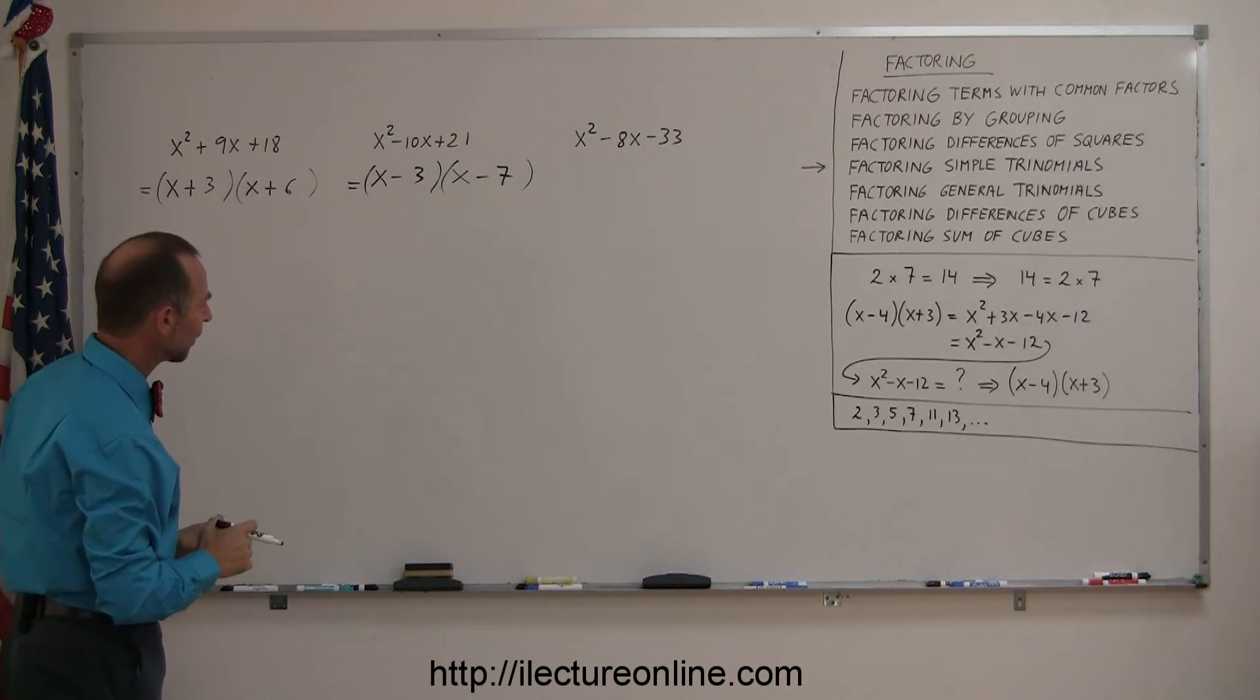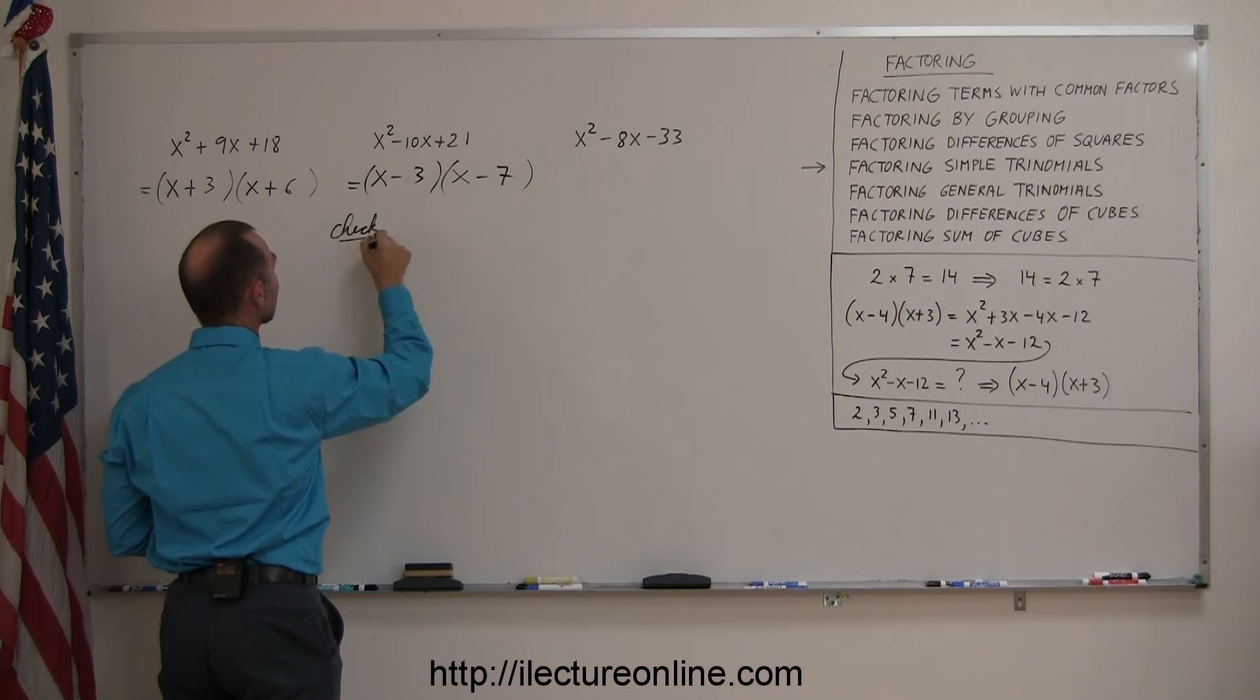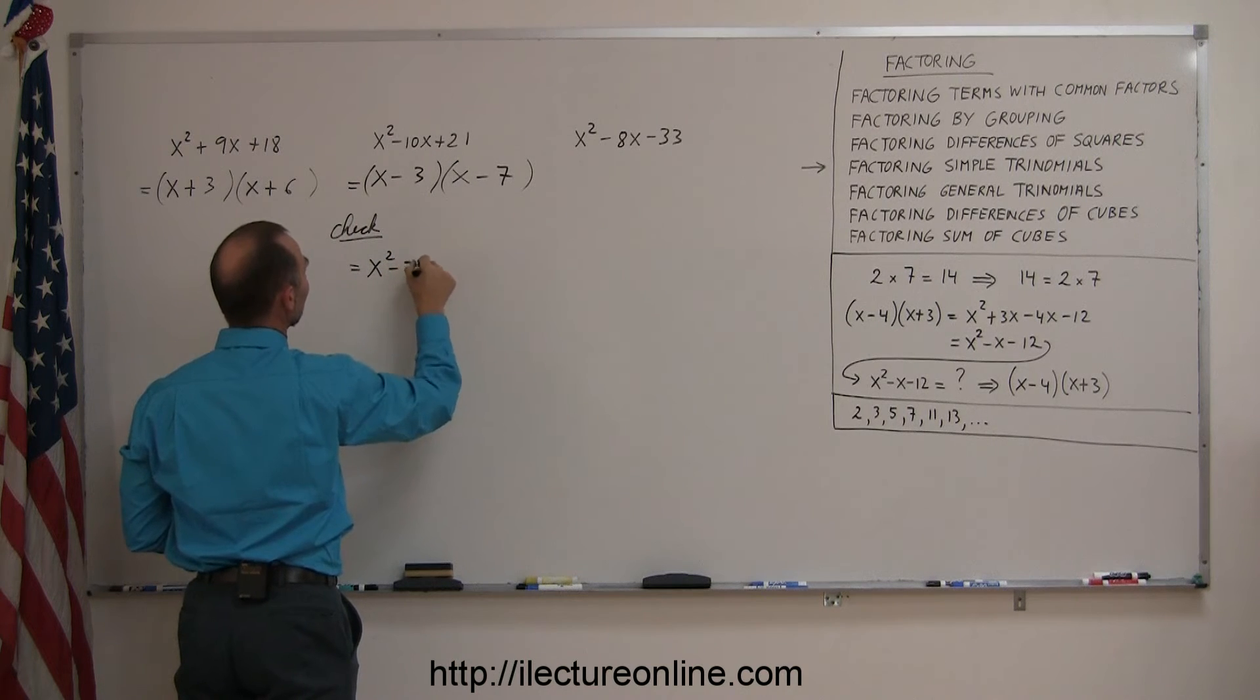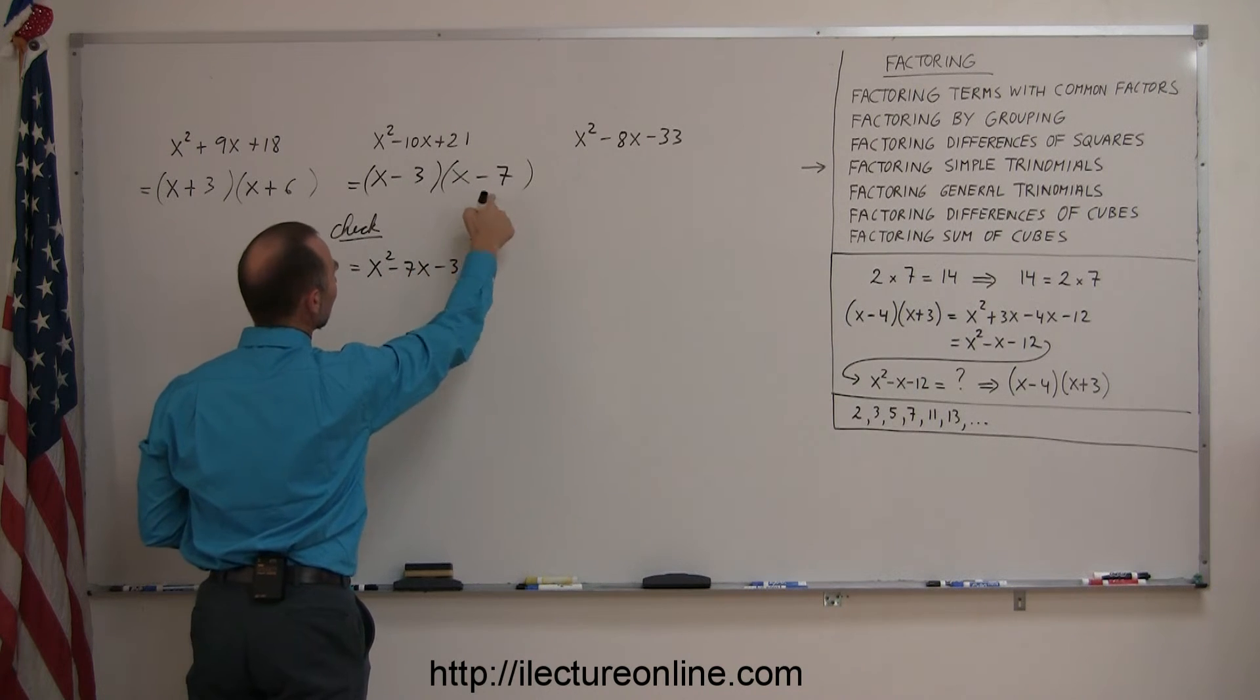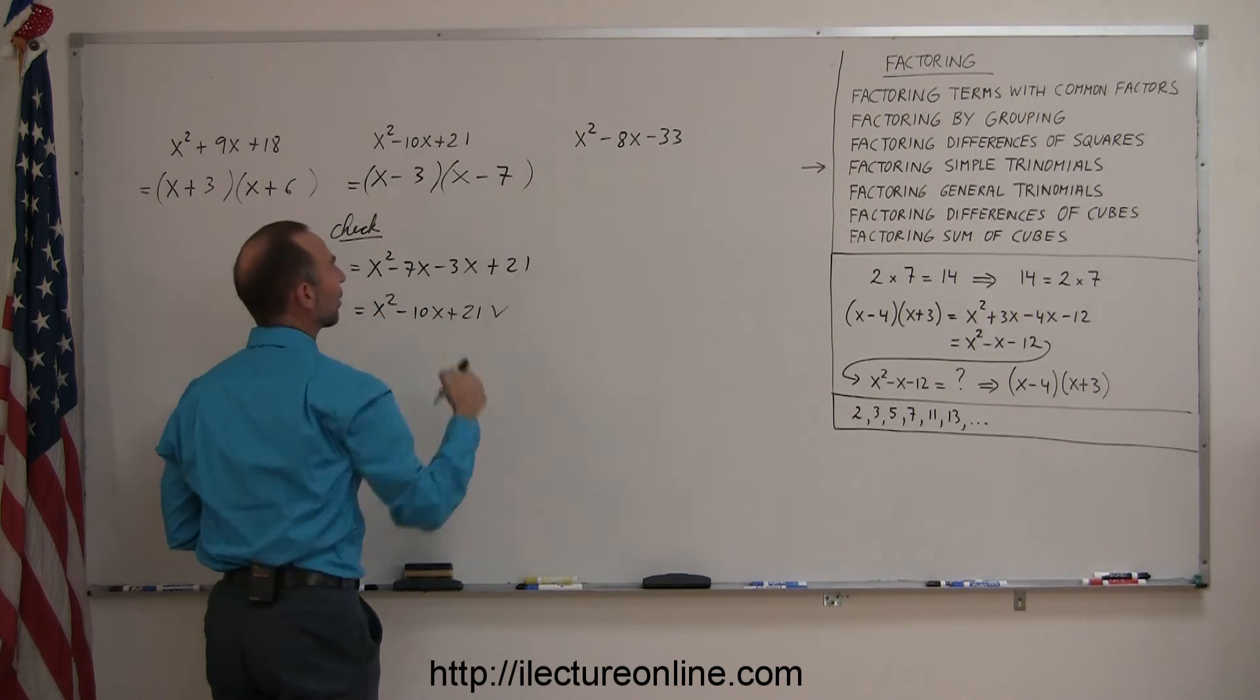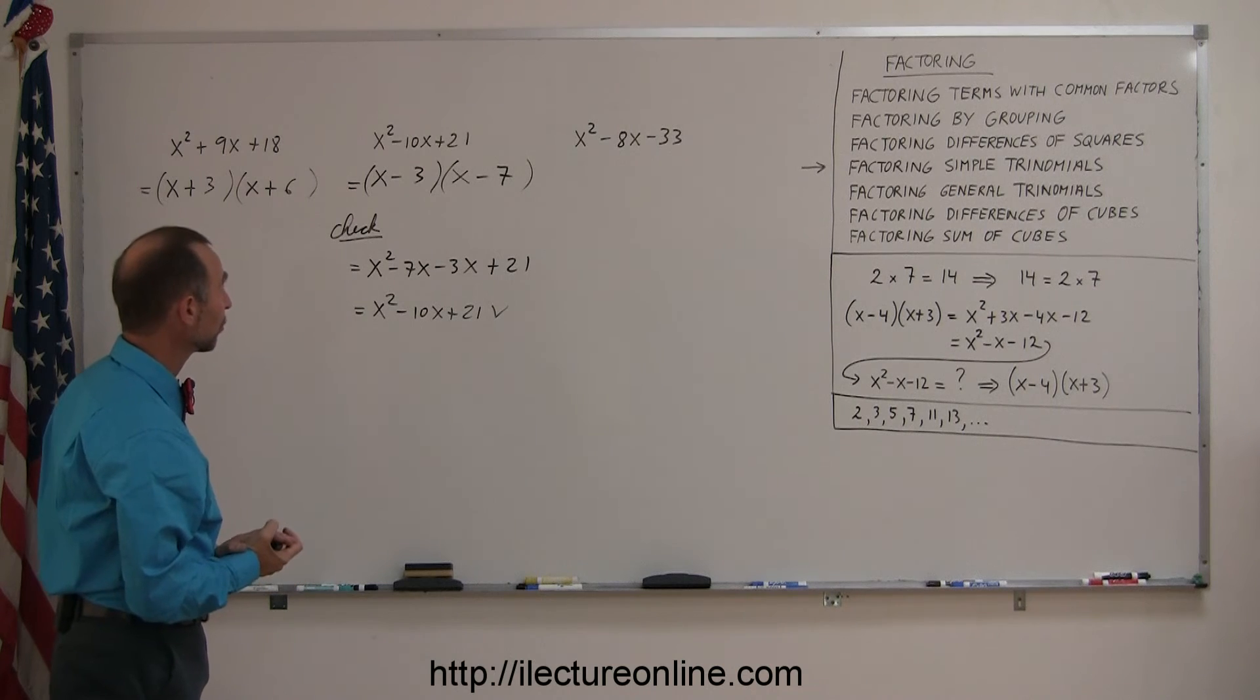If you're not sure, quickly go ahead and multiply everything out again, so we can do a check. If I multiply the x times the x, I get an x squared. Multiply the x times the minus 7, that's a minus 7x. Multiply the minus 3 times the x is a minus 3x. Multiply the negative 3 times the negative 7 gives me a plus 21. If I add these together, that's equal to x squared minus 10x plus 21, and sure enough, that's what I started with. Whenever you're not sure, always multiply them together again and see if you end up with what you started.